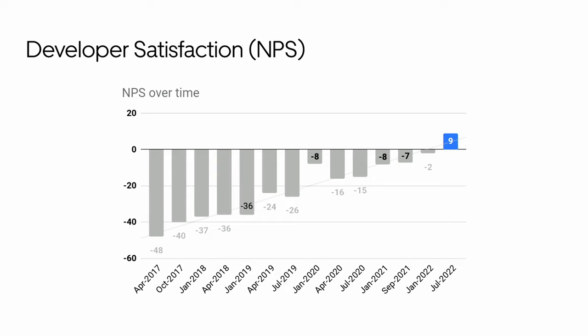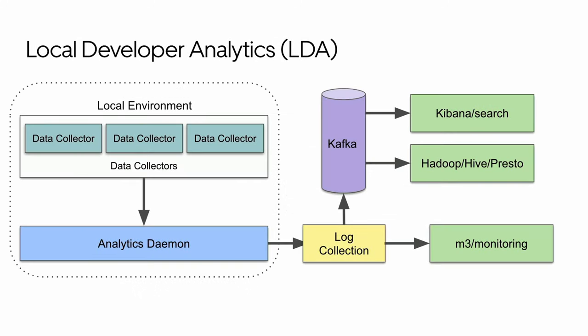NPS asks the question: would you recommend this developer stack to someone else? We've been tracking this for a long time. We've seen it consistently going up and to the right as we continue to invest, and developers are more productive and happier. In the survey, we also ask a bunch of freeform questions, and with those comes great feedback that we're able to take into our roadmaps and planning.